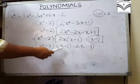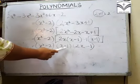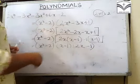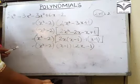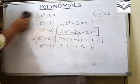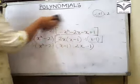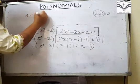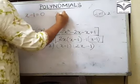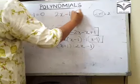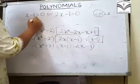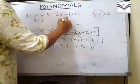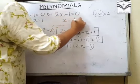So jo baaki do factors hain, vo hain x - 1 and 2x - 1. Ab inme se aap 0s nikal sakte ho — x - 1 = 0 and 2x - 1 = 0. Toh yahan aayega x = 1 aur yahan aayega x = 1/2.